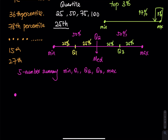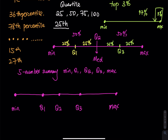Here is what a box plot looks like. You start at the minimum, then mark Q1, Q2, and Q3, and extend to the maximum. To construct the box, we draw a box between Q1 and Q3, and then draw one more line inside the box for Q2. The lines extending from the box out to the minimum and maximum are called whiskers.